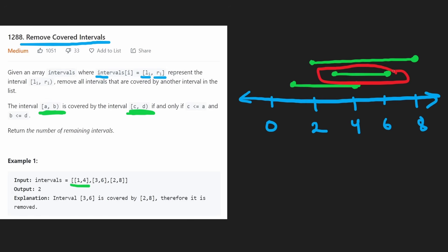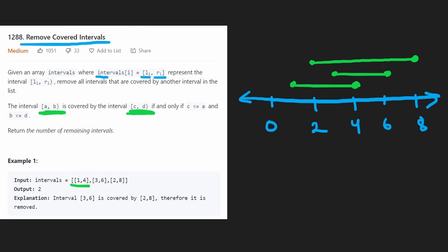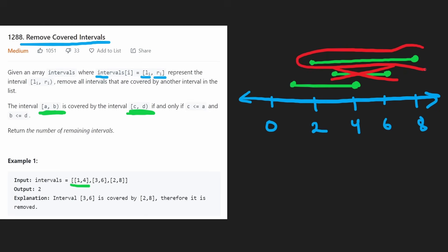Is this interval being covered? Well, this interval is definitely not covering it — even though this point is less than or equal to this point, this point is not greater than or equal to this point. Is this interval covering this one? Its left point is less than or equal to this one, and its right point is greater than or equal to this one. So yes, this interval is being covered by this one, and therefore we can remove it. Now is this interval being covered? We'd look at the only remaining interval — nope, it's not.